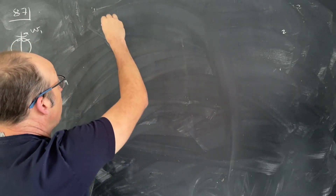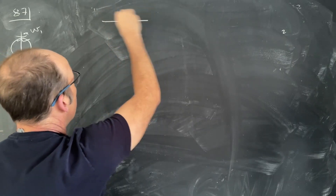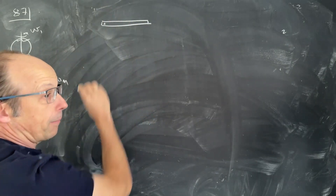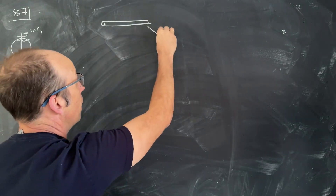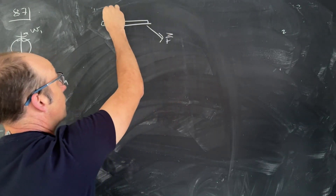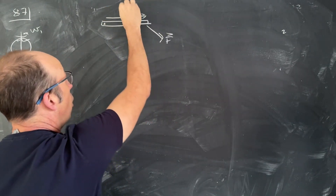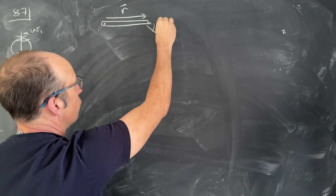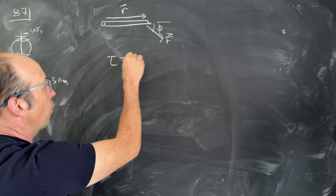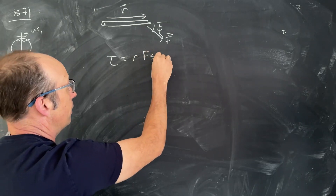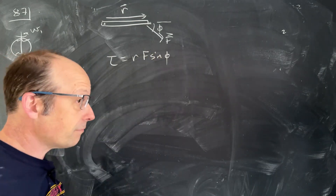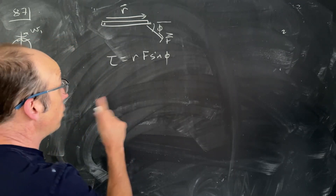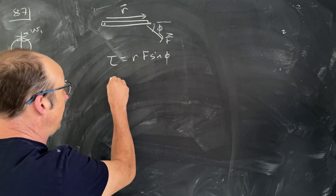Previously we said: if you have a beam rotating about a point, with a force F applied at distance r from the center at angle phi, then the torque is r·F·sin(phi). That's not wrong, just not complete. We can actually write torque as a vector.